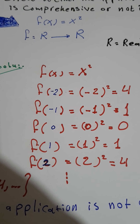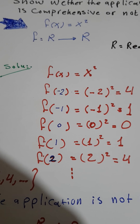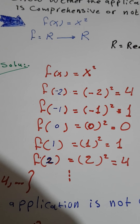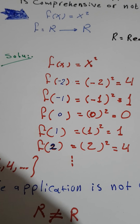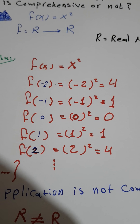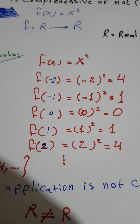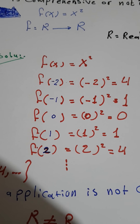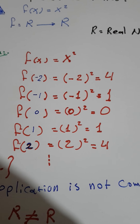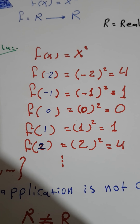Continuing the same operation: f(0) = 0² = 0, f(1) = 1² = 1, and f(2) = 2² = 4.